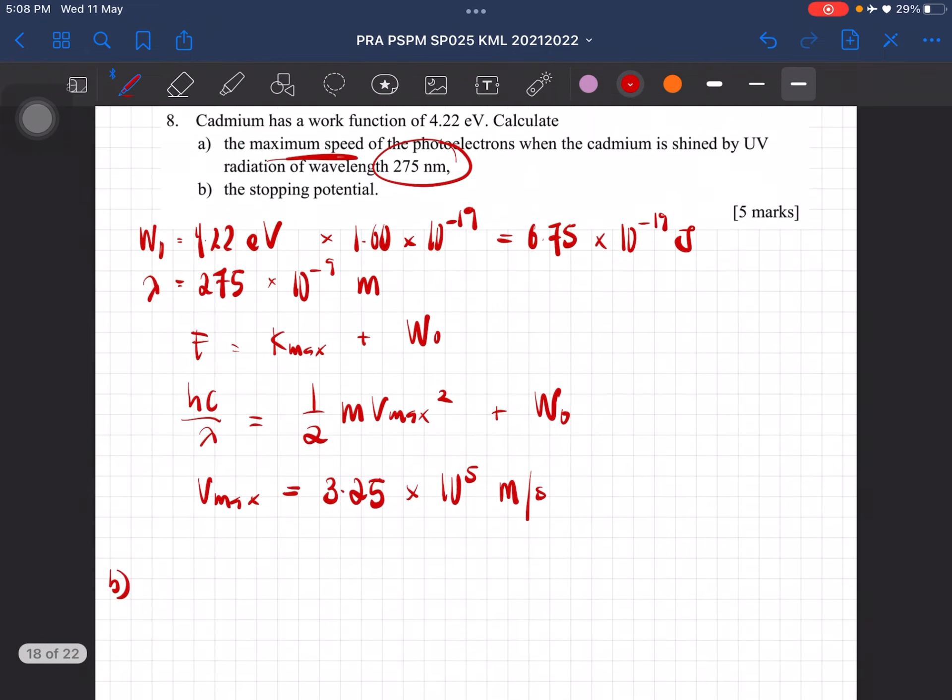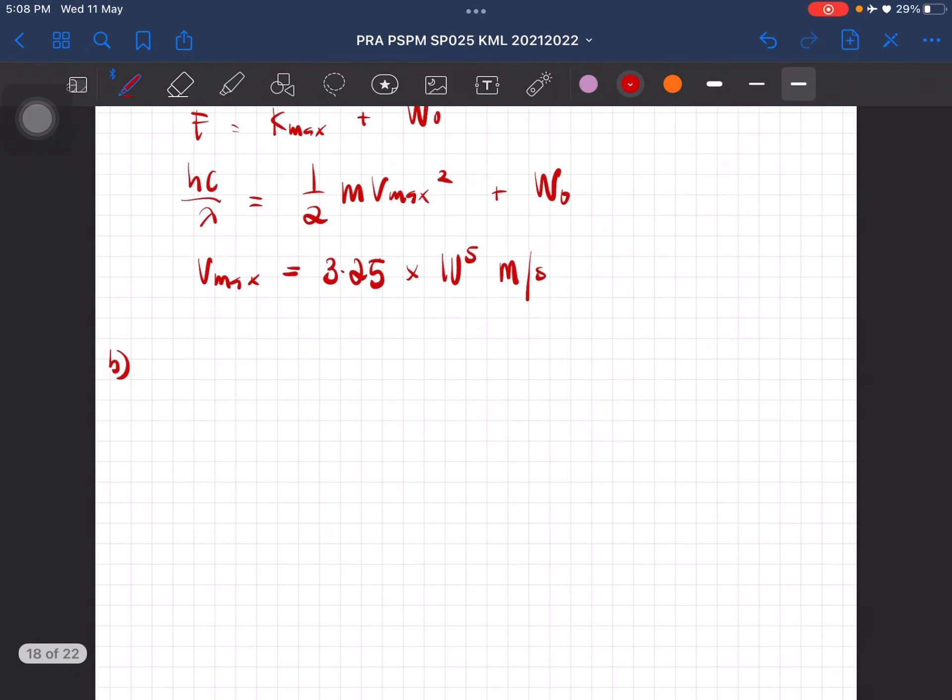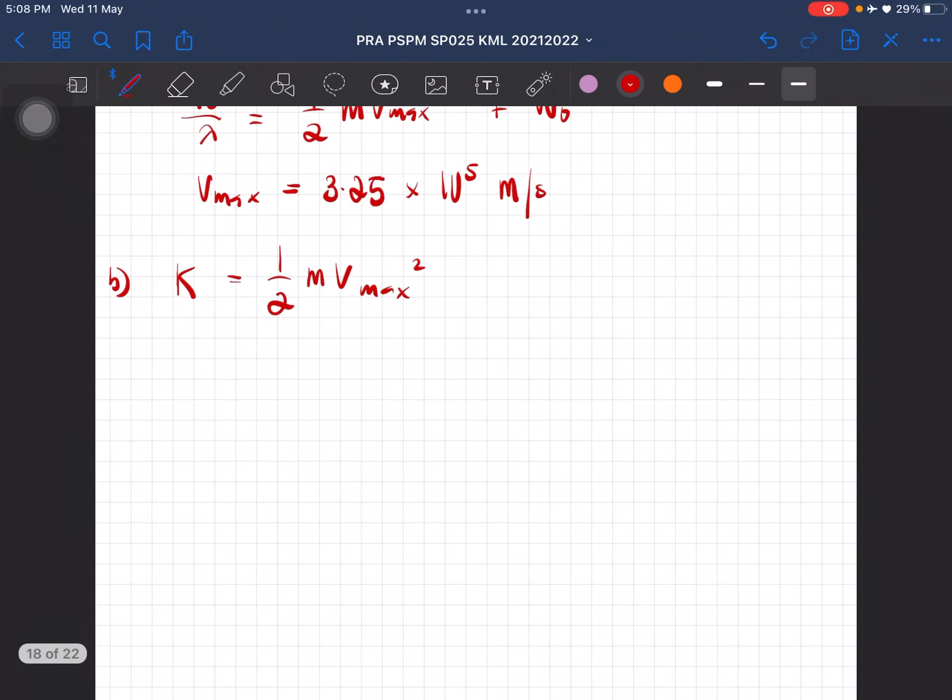Question B, we have to calculate the stopping potential. We know that K is equal to half m v squared. We also know that the kinetic energy is equal to e Vs, which is Vs, and that's what we are looking for.